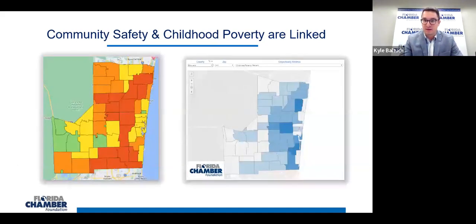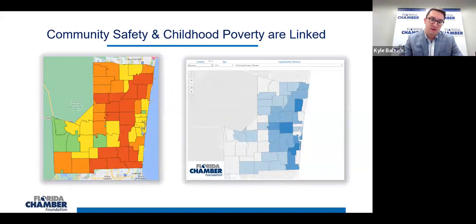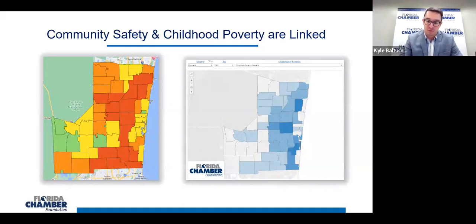It's not just a reality for our community here in Leon County. I pulled Broward County because it tends to be one of the communities we talk about a lot, and it is similar within Broward County. On the left-hand side, red is the most prevalent area of homicides, then orange, then yellow, then green. On the right-hand side, darker blue indicates higher prevalence of childhood poverty rates, and lighter blue indicates lower prevalence. Again, those maps are extraordinarily similar, and it happens in nearly every single one of our communities throughout the state of Florida.